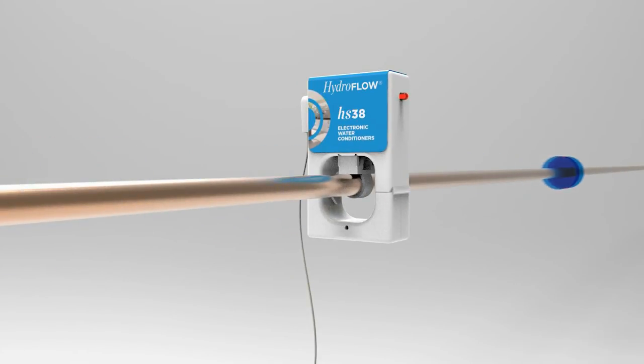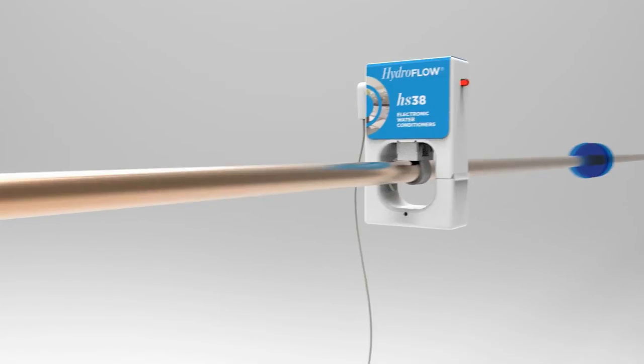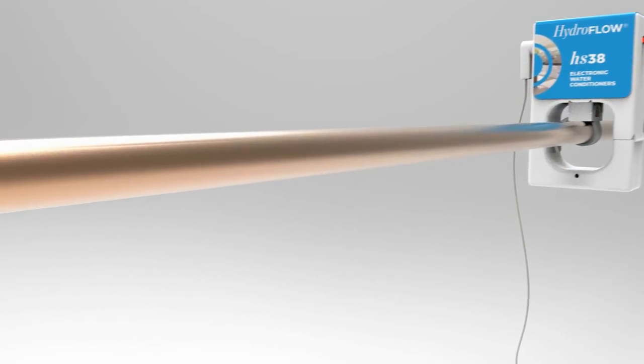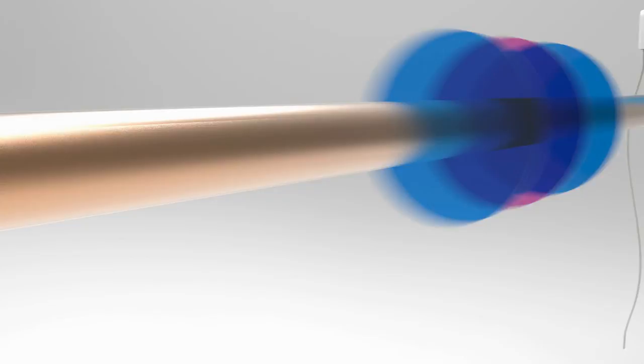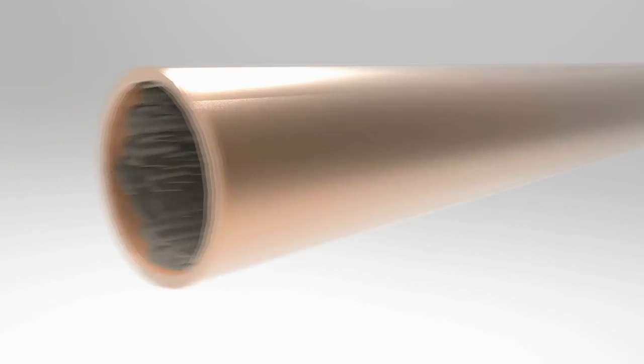It protects against limescale without changing the chemistry of the water by transmitting an electric field into the pipe that travels throughout the entire plumbing system of the house, protecting all places where water is heated.